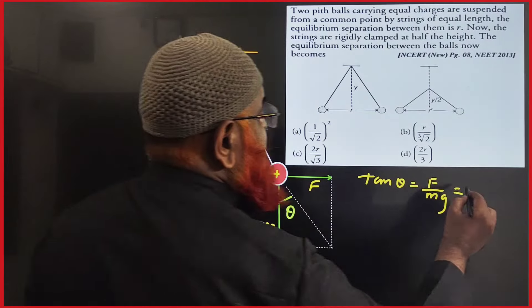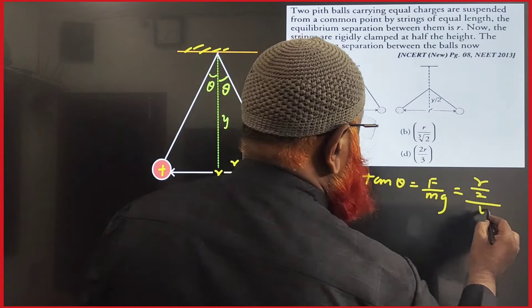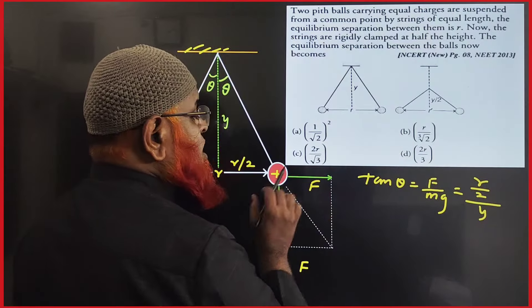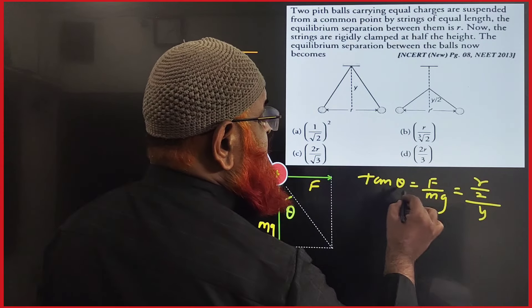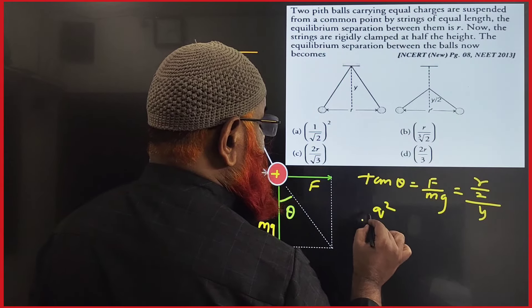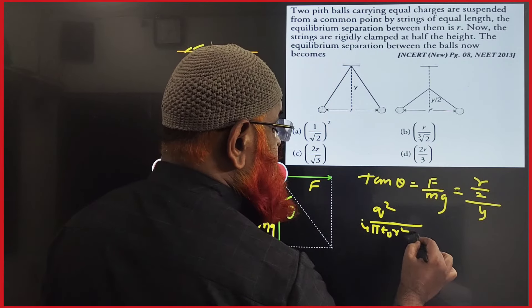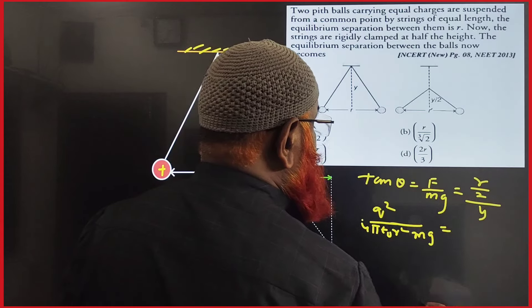opposite side that is R by 2 divided by adjacent side Y. And you know what is F, so here what I am going to do, instead of F I am writing Q² by 4πε₀ into R², and this mg comes here and which can also be taken as R by 2Y.